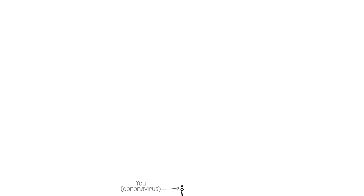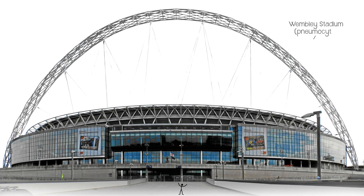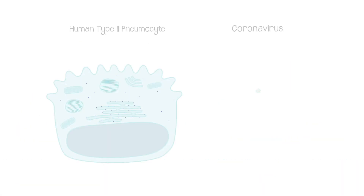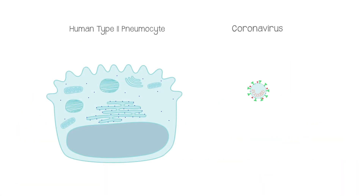So if you were a coronavirus, a human cell would be the size of Wembley Stadium. For the purposes of this animation, we're going to scale up our coronavirus. You can see that viruses lack a lot of the structures that you'd find in a human cell, or indeed any cell, including other animal cells, bacterial cells, yeast cells, and so on.